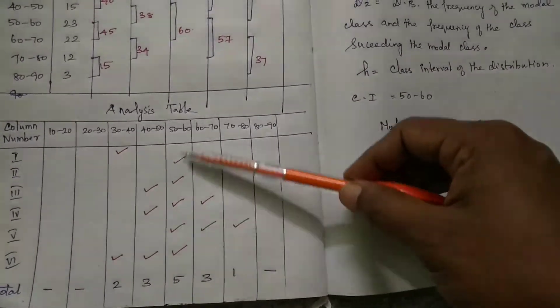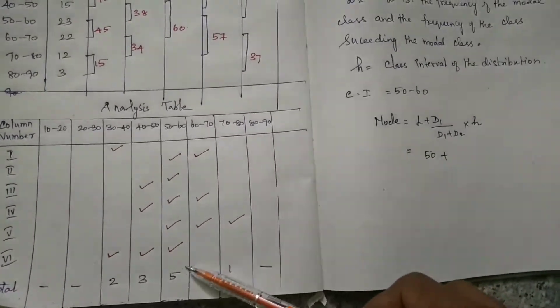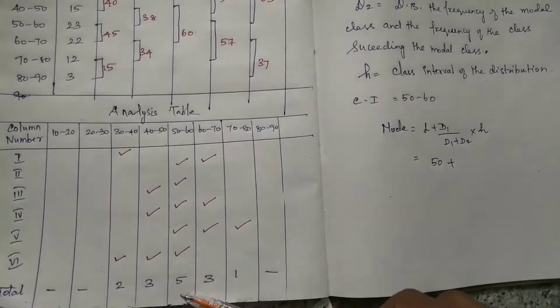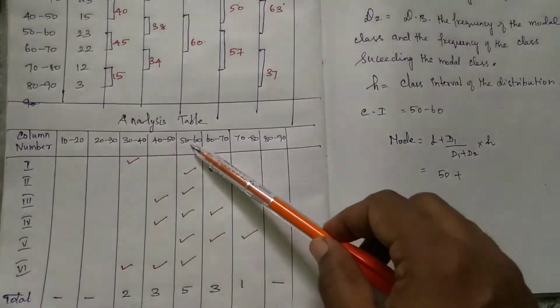Now, total values of ticks are 5. The highest frequency, highest value, is 50 to 60. So the class interval is 50 to 60.